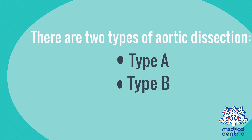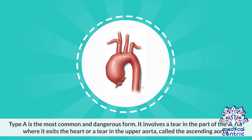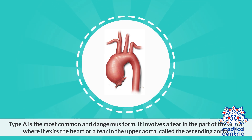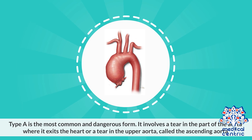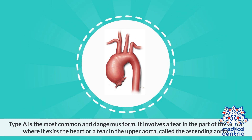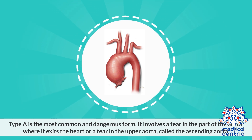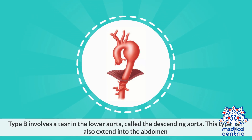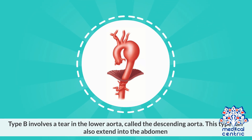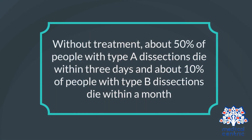There are two types of aortic dissection: type A and type B. Type A is the most common and dangerous form. It involves a tear in the part of the aorta where it exits the heart, or a tear in the upper aorta called the ascending aorta, and it can extend into the abdomen. Without treatment, about 50% of people with type A dissections die within 3 days, and about 10% of people with type B dissections die within a month.